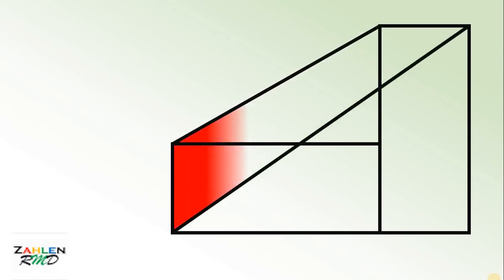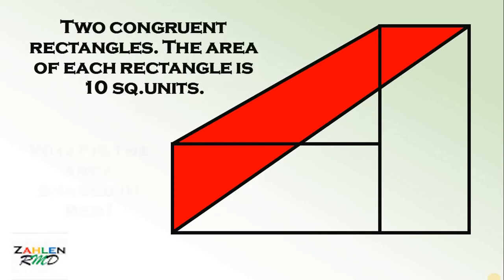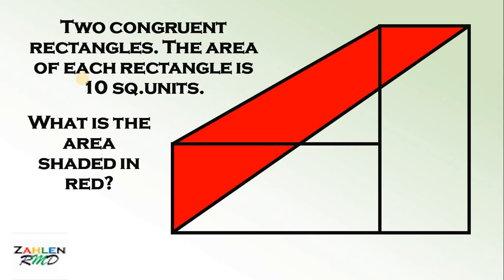Here's the question. Given these two congruent rectangles, the area of each rectangle is 10 square units. And the question is, what is the area shaded in red?